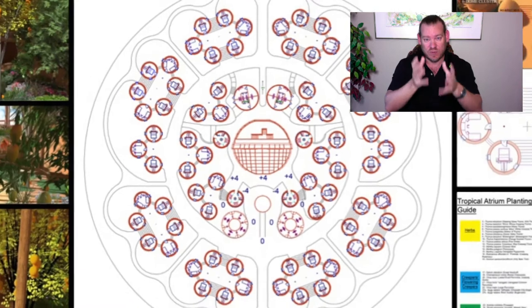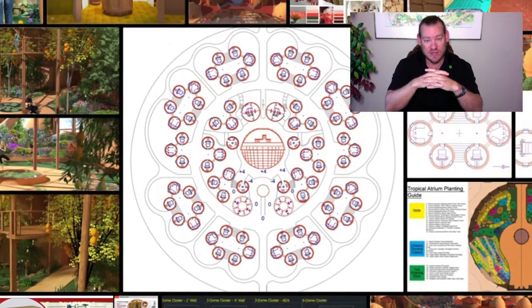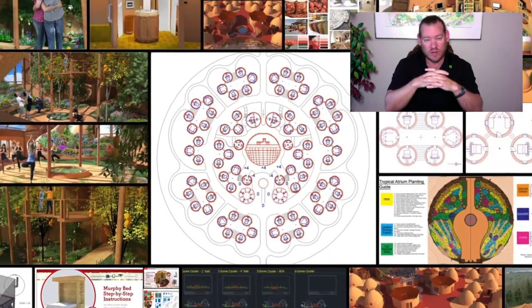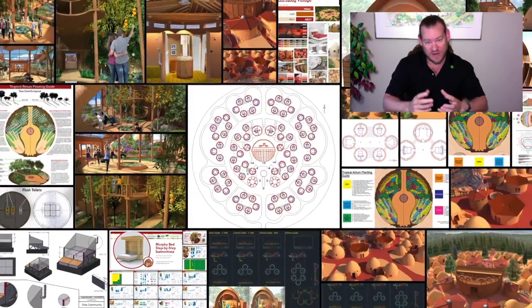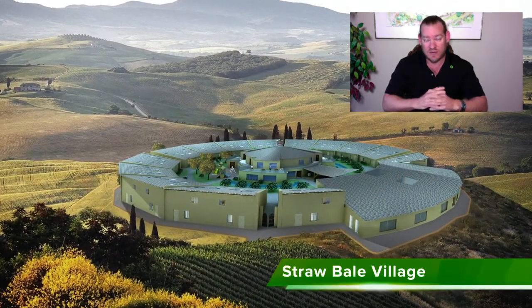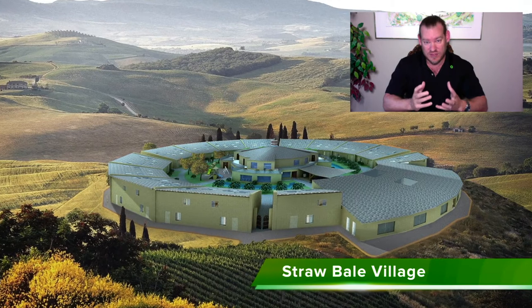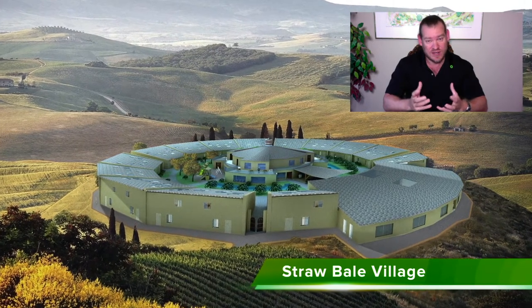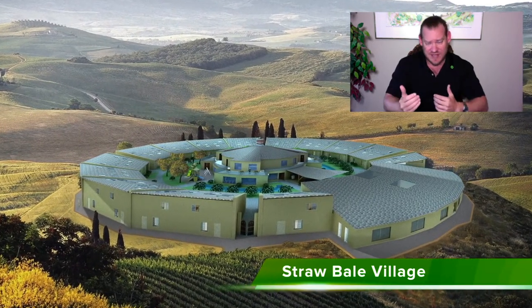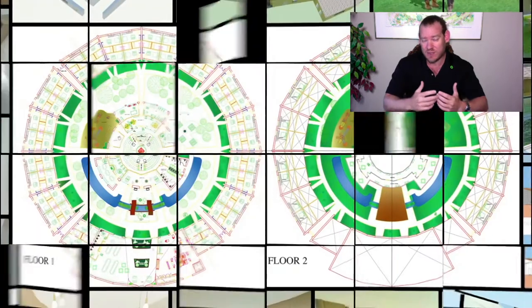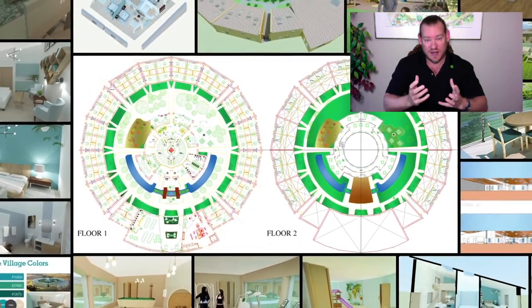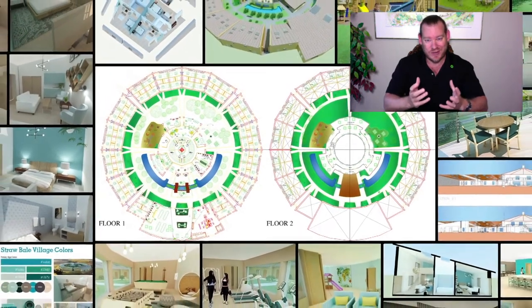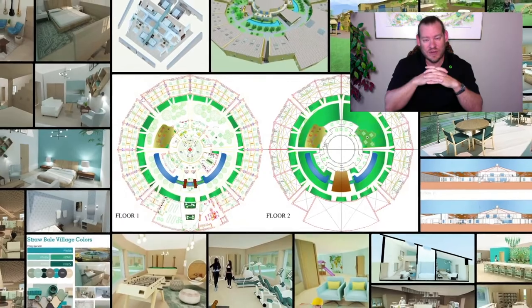We can reduce the amount of trash we produce by buying things in bulk — buying things we would normally buy in single or family-use containers in barrels and large-scale containers instead. We can also reduce waste by growing our own food, by building sustainable housing so we have less waste from the construction process, and by building sustainable energy infrastructure so that everything we do is sustainable.